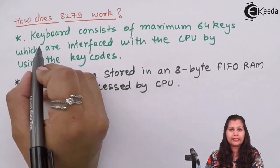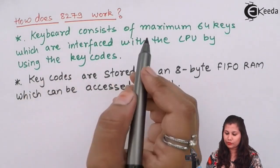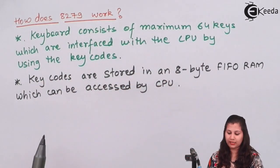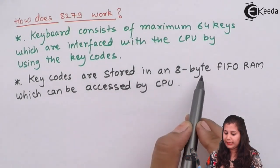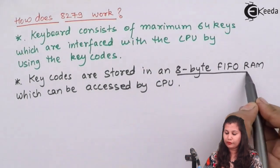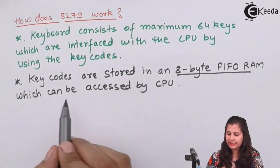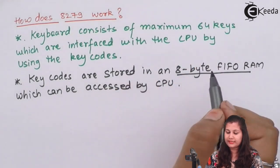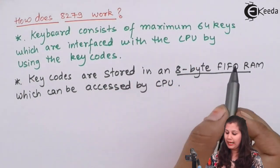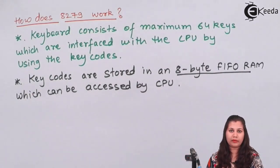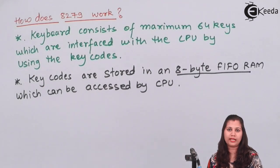When a key is pressed, the 8279 stores the key code of that pressed key into the 8-byte FIFO RAM. This FIFO RAM is then accessed by the CPU. The CPU reads the 8-byte FIFO RAM and through the key code it determines which key was pressed, then performs the function associated with that key.